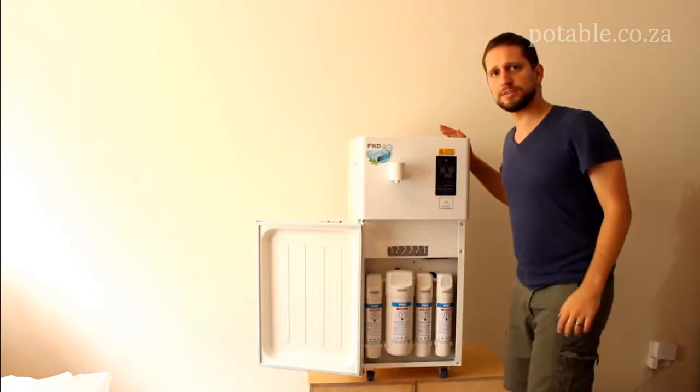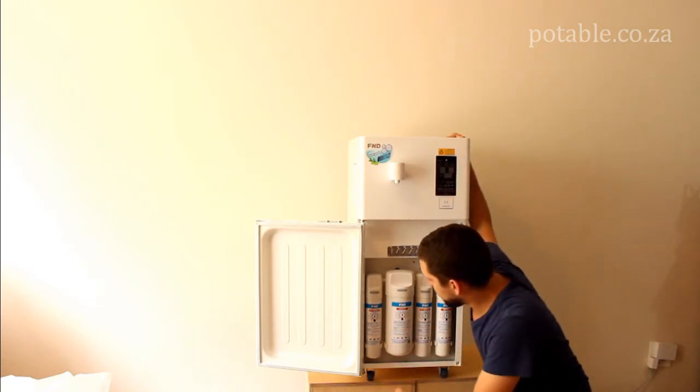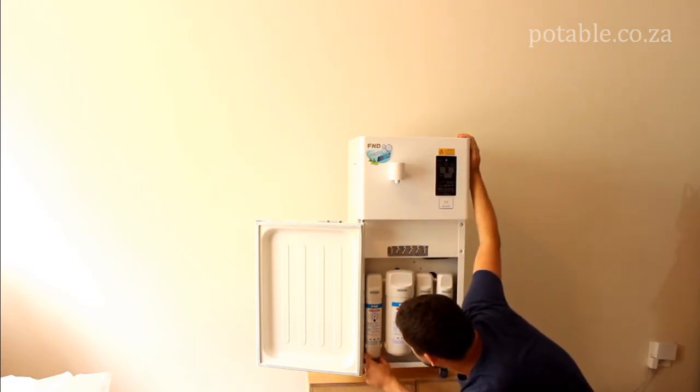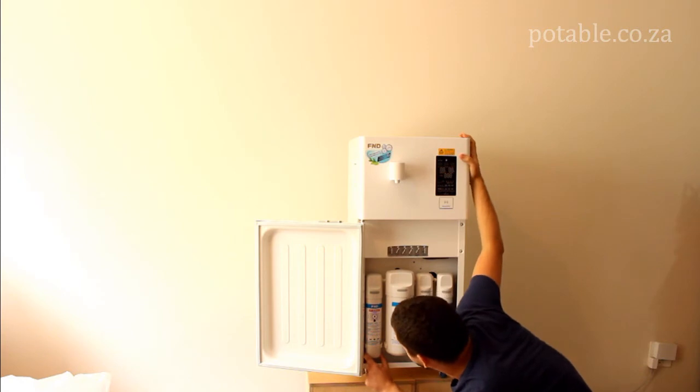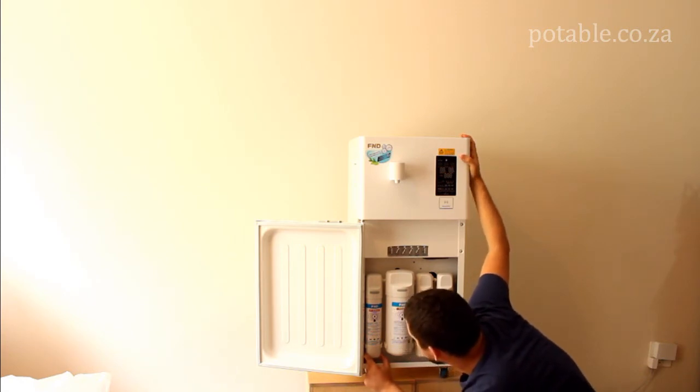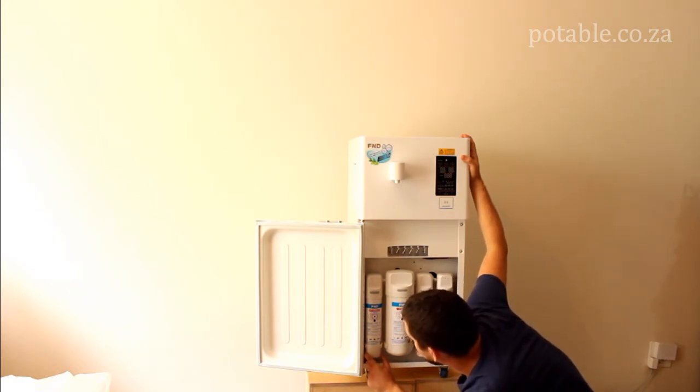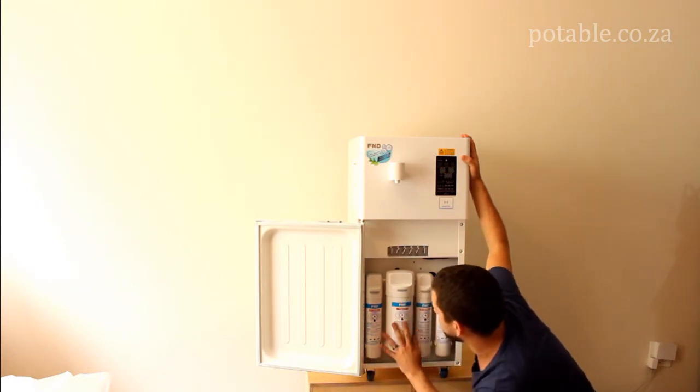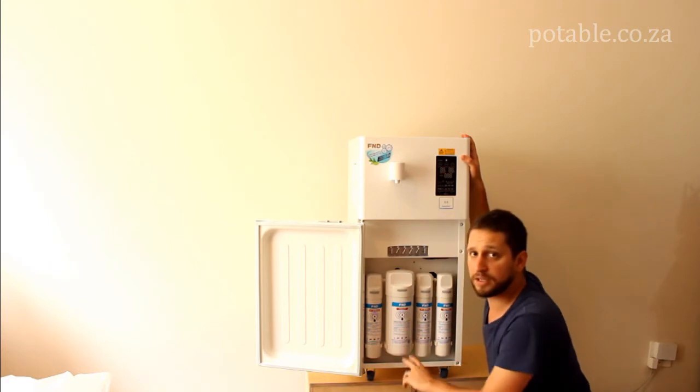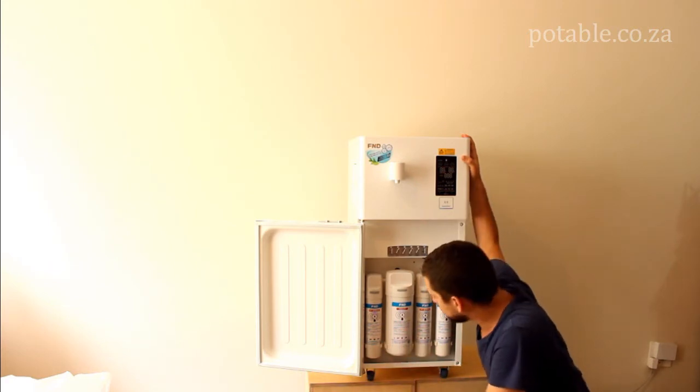Now if I come around to this side you will see that on the left hand side here it has an effective water filter out of sediment, rust, suspended organic matter, residual chlorine and ammonia odor. Now this bigger filter is the reverse osmosis filter.